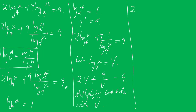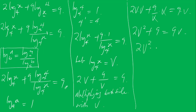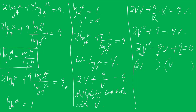Multiplying both sides by V, we get 2V squared plus 9 equals 9V. Rearranging gives 2V squared minus 9V plus 9 equals 0. Now let's factorize this. The factors of 2V squared are 2V and V.